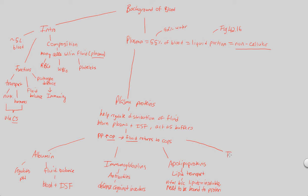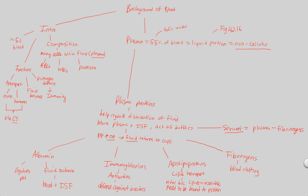We also see proteins known as fibrinogens, which are plasma proteins very important in blood clotting. They will come up later when we talk about platelets and their role in blood clotting — both work together. Finally, serum is simply plasma minus the fibrinogens, minus those blood clotting factors. Serum can be useful in detecting many different things and in diagnostics when discussing medicine or healthcare. That covers our look at plasma proteins.